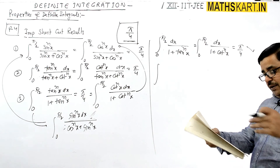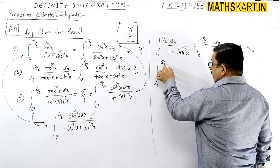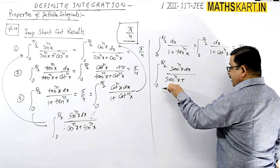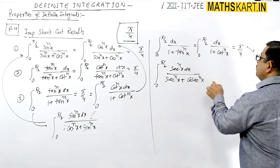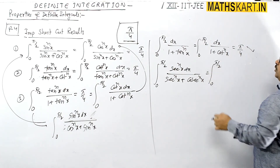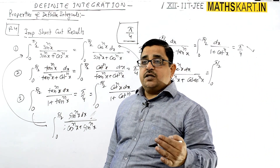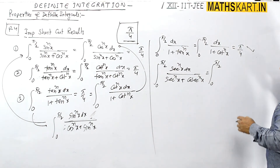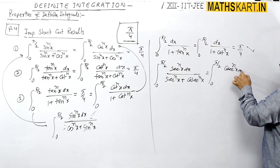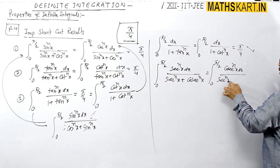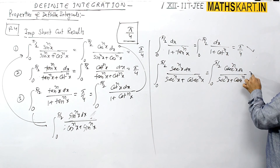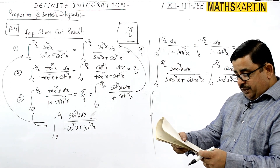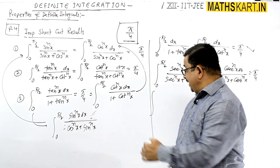Sec and cosec follow the same pattern. If the integral from 0 to π/2 of sec^n(x) / [sec^n(x) + cosec^n(x)] dx is given, the answer is π/4. And integral from 0 to π/2 of cosec^n(x) / [sec^n(x) + cosec^n(x)] dx is also π/4, because sec converts to cosec and vice versa when using (90° - θ), so by Property 4 the answer is π/4.